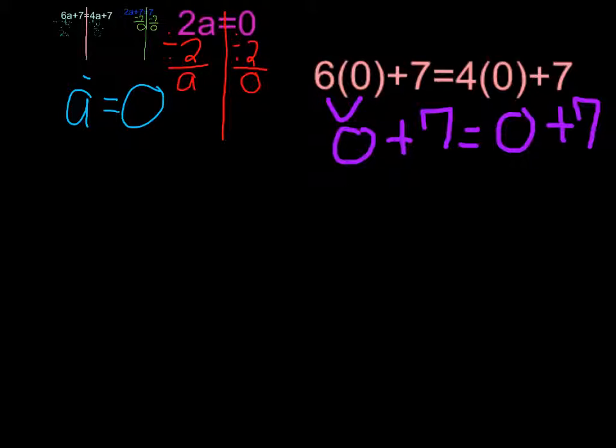So you want to take 0 plus 7. And that equals 7. Take down the equal sign. And then 0 plus 7. Which equals 7. So when 7 equals 7, that means you know both sides. So a really does equal 0.